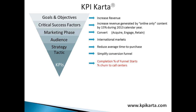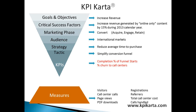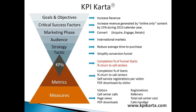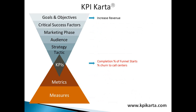The KPIs they wanted to look at were the completion percentage of funnel starts — what percentage of people started, and if they didn't complete it, where did they go — and the percentage churn of those people to call centers: how many people started the process and what percentage bailed partway through to call an 800 number, which they wanted to decrease. The measures then are all the various numbers, including visitors, call center calls, page views, and so on. The effect of all the work done throughout the year is to increase revenue, but that's not something you can measure strictly through KPIs. Instead, we want to measure the cause, and if we accomplish those KPIs, the revenue will take care of itself.